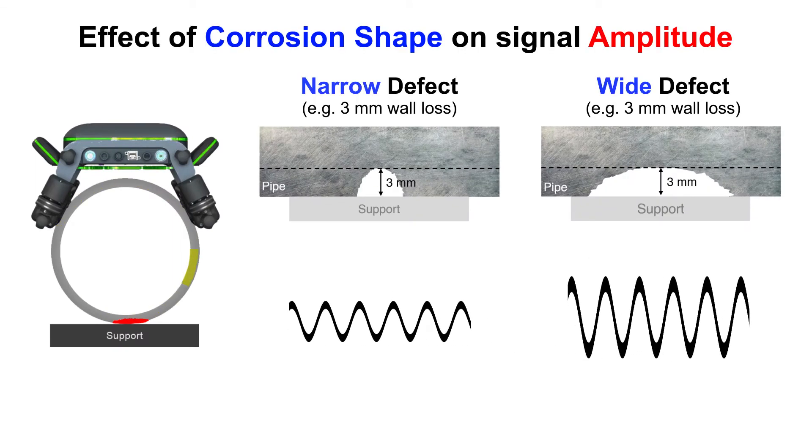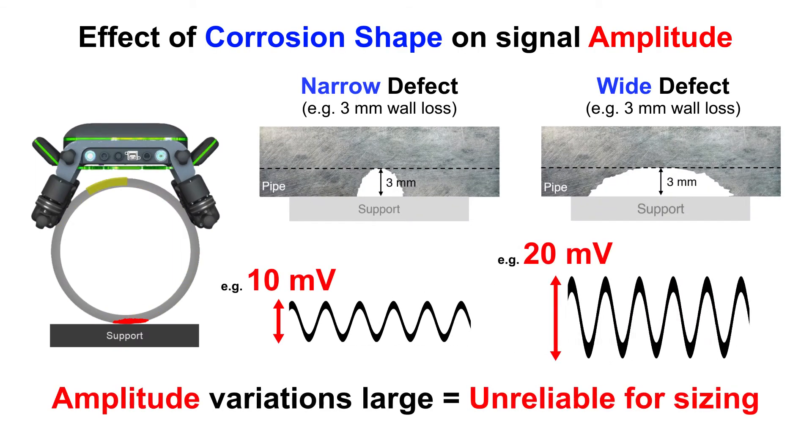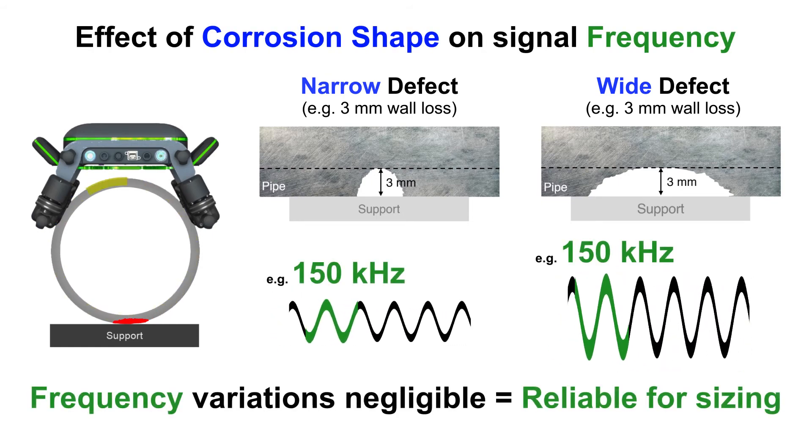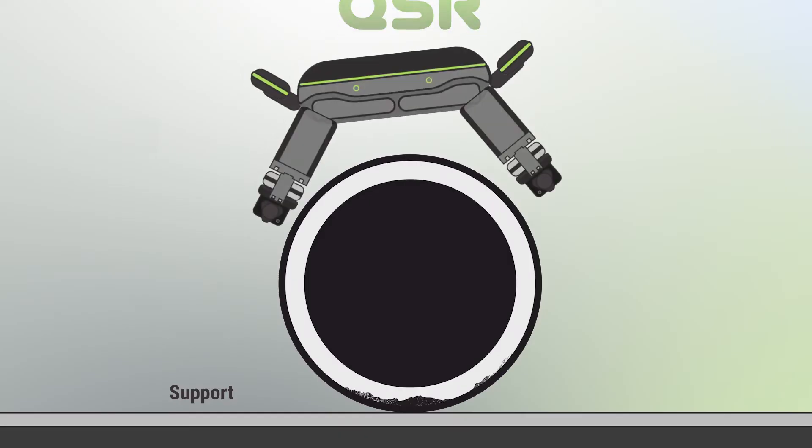The corrosion shape affects the wave scattering intensity. Therefore, wave amplitude variations could be large and become unreliable for corrosion sizing. However, wave frequency variations are negligible. Therefore, making frequency analysis a reliable corrosion sizing analysis method.